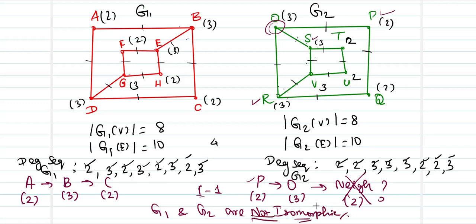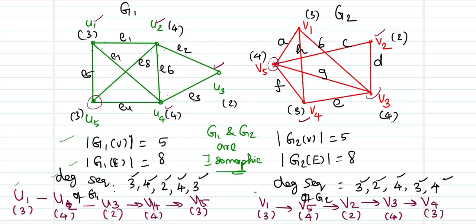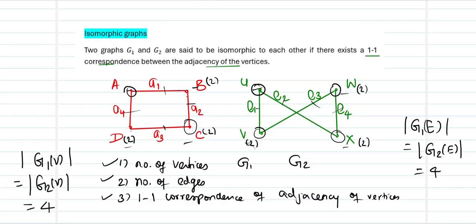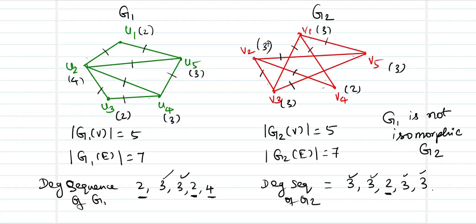It is not sufficient that the degree sequence alone matches. We need to verify whether there is a one-to-one correspondence between the adjacency of vertices. If this does not hold, we cannot say the two graphs are isomorphic. I hope these examples have given you an idea of what graph isomorphism means and how it can be verified. Happy learning, keep learning, thank you.